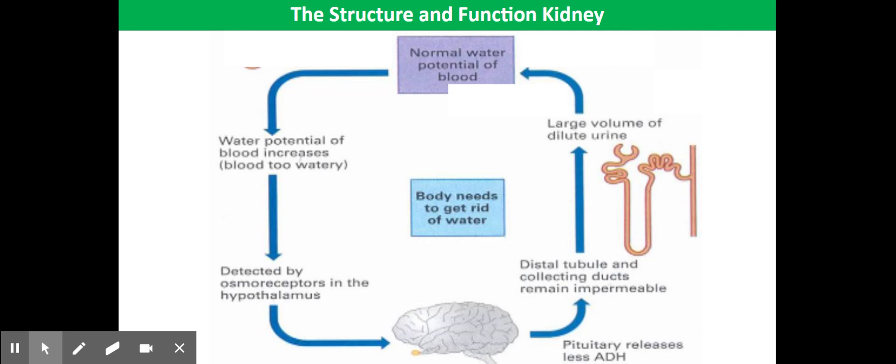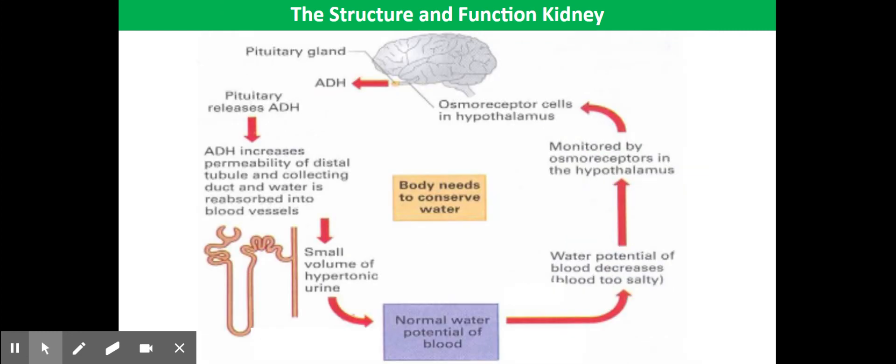The other half of that graph is the opposite situation - if you're dehydrated, how is your body going to conserve water? If the water potential of your blood is too low, the hypothalamus is going to cause the pituitary gland to release more ADH, more antidiuretic hormone.